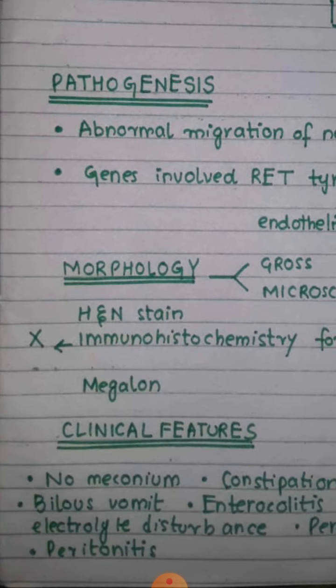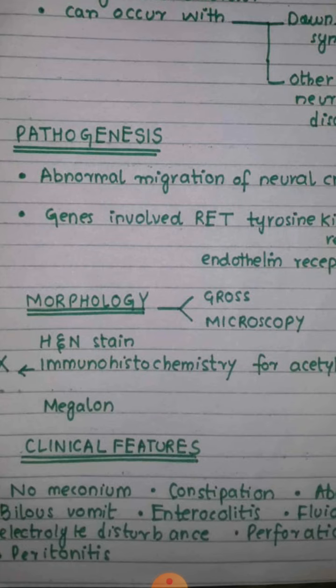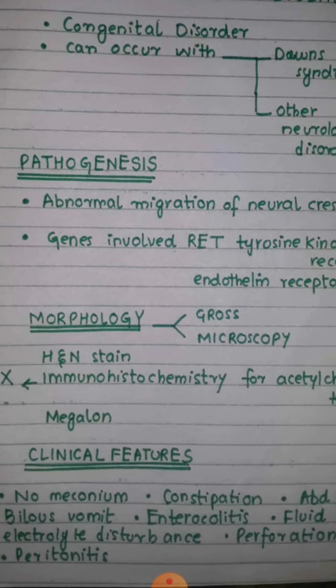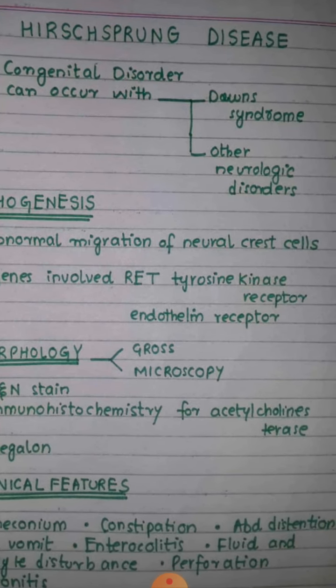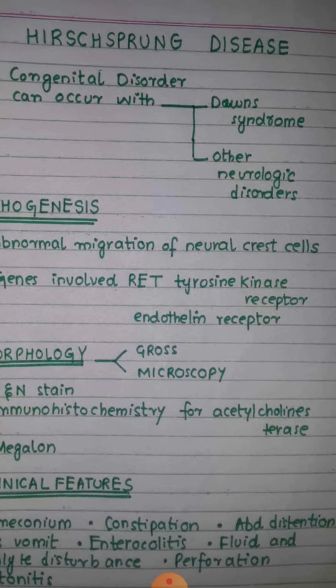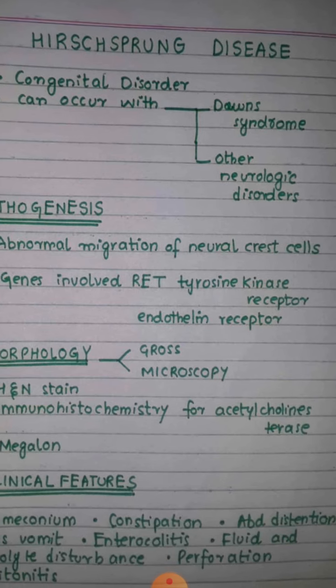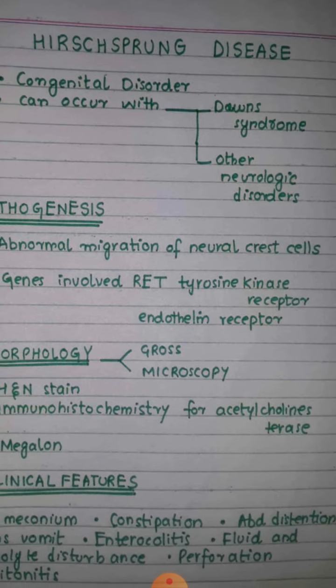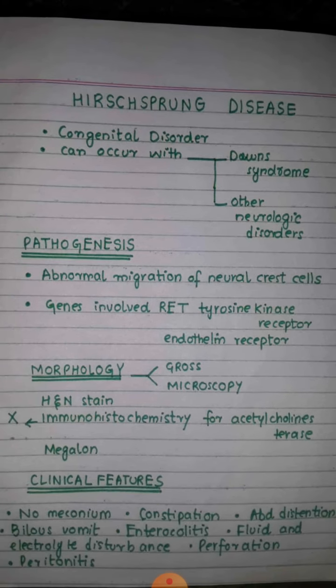This is all about Hirschsprung disease. The treatment of Hirschsprung disease is surgical resection, where the part of the colon involved in Hirschsprung disease — the aganglionic segment — is removed. This surgical removal is the treatment for Hirschsprung disease.